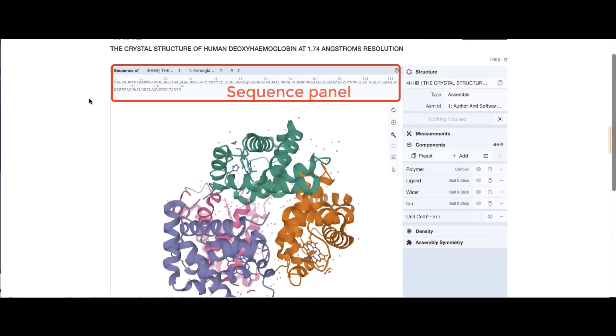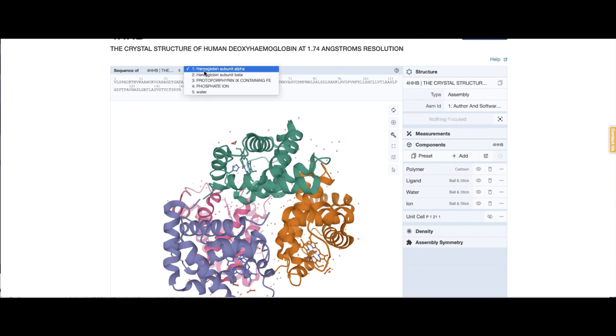On the top, the sequence panel gives you access to the sequence of all polymers and other contents in the structure. So in this case, there are the two hemoglobin entities. And if I select one entity, there are two copies, so chain A, chain C.